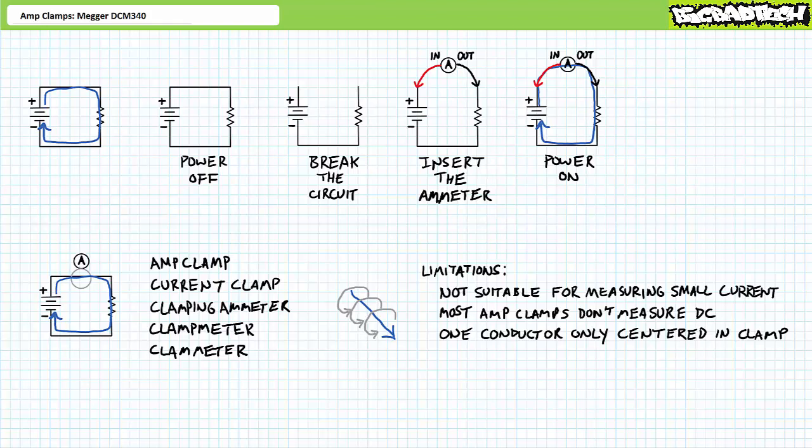Finally, as easy as these things are to use, you can still screw it up. First, to get an accurate reading, the current carrying conductor needs to be centered inside the clamping mechanism.